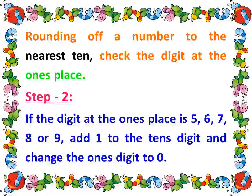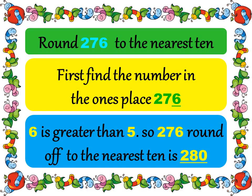Step 2: If the digit at the 1's place is 5, 6, 7, 8, or 9 — that is, 5 or greater than 5 — add 1 to the 10's digit and change the 1's digit to 0. For example, round 276 to the nearest 10. The digit in the 1's place is 6. Since 6 is greater than 5, we add 1 to the 10's digit and change the 1's digit to 0. Therefore, 276 rounded off to the nearest 10 is 280.